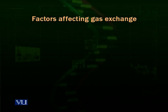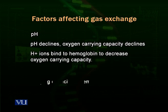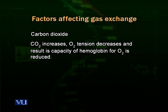Now we talk about various factors which can affect gas exchange. These factors are carbon dioxide, temperature, and pH. When carbon dioxide is increased, it actually decreases the oxygen tension, which results in the capacity of hemoglobin for carrying oxygen being reduced. This results in the release of oxygen molecules towards the blood.